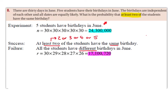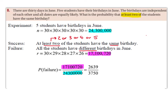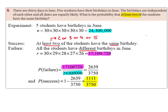So dividing these gives us the probability of the failure, and subtracting from one gives us the probability of success. The probability of the failure is 2,639 over 3,750, and subtracting this from one leaves us with 1,111 over 3,750. So this is the probability that at least two of the students have the same birthday.